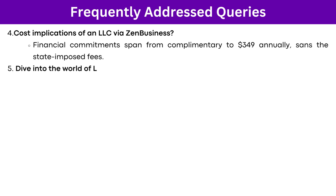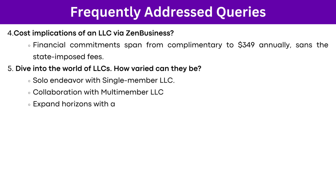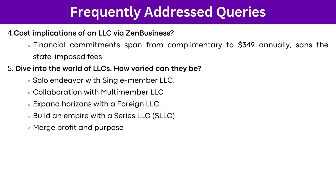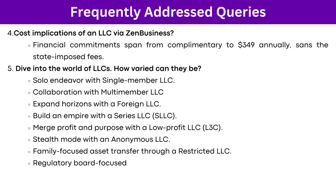How varied can LLCs be? Types include: a single-member LLC for solo endeavors, multi-member LLCs for collaboration, a foreign LLC to expand horizons, a series LLC to build an enterprise, a low-profit LLC to merge profit and purpose, an anonymous LLC, a restricted LLC for family-focused asset transfer, and a professional LLC focused on regulatory boards.